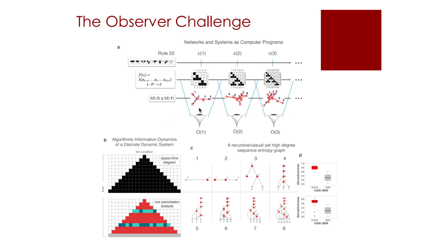For almost any representation one can come up with a set of equivalent representations fully describing the same objects, but allowing us to see different features of the same phenomena. We have also seen how using some measures looking at different features and representations can bias our results, and we have seen how to attempt to move away from language-dependent measures towards more objective means to analyse data and infer models.